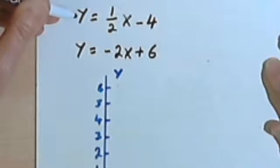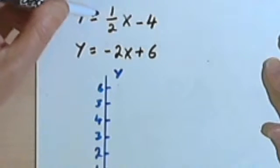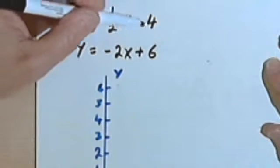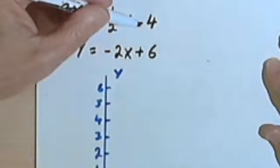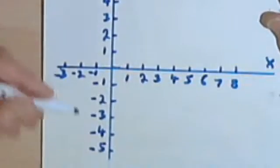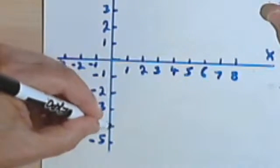So to graph the first line, we have y equals 1/2 x minus 4. First I'm going to find the y-intercept, or the vertical intercept—that's negative 4. So that's going to be down here on my number line.